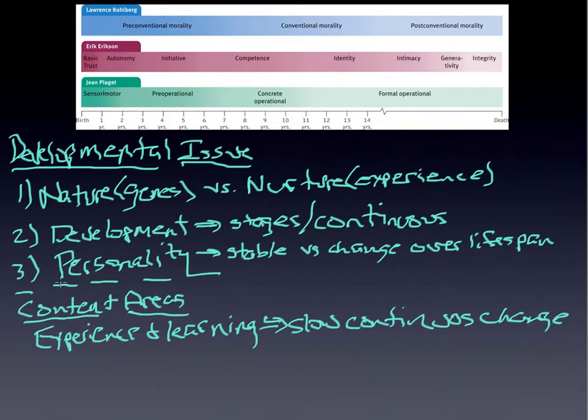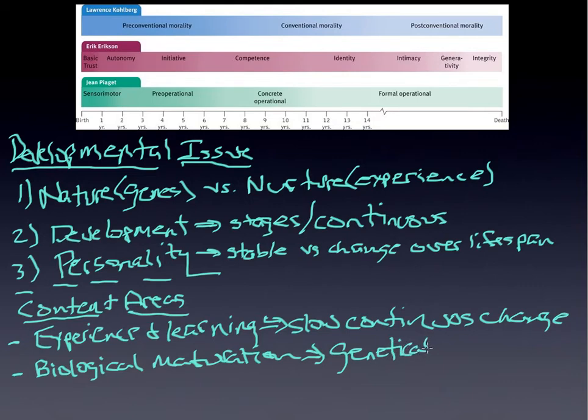On the other hand, those that emphasize biology, that look at biological maturation and are pretty much kind of anchored into that area, what you will find is they tend to, as you can probably already predict as I'm writing this, is that they tend to predict genetically predisposed stages.